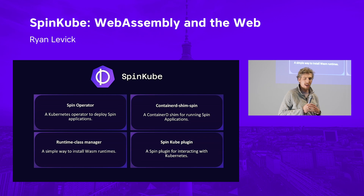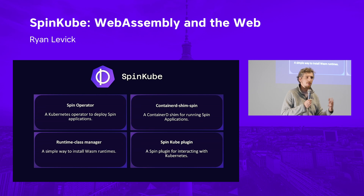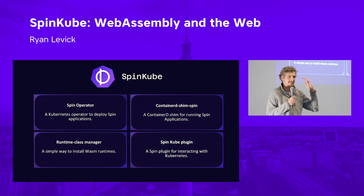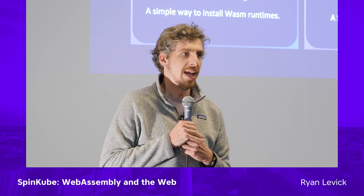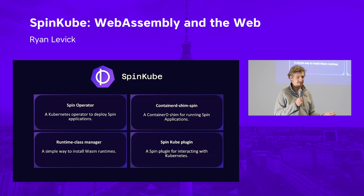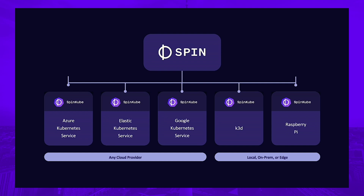SpinKube takes Spin's event-driven WebAssembly paradigm and puts it onto an orchestrator you're probably already running — Kubernetes. It allows you to run those workloads on Kubernetes and by default get to a place where instead of one node running maybe 10 pods, you can run far more. The max pod number in Kubernetes is set to 256 or so — that's a Kubernetes limitation — but you can utilize the node much more efficiently. You don't need bigger machines; even smaller machines work because it's just a lot more efficient.